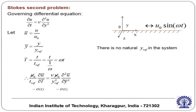Last time we were discussing about some examples of unsteady flows, and in one example we were considering an oscillating boundary. The solid boundary oscillates with a velocity u₀ sin(ωt), so it is a sinusoidal oscillation. We have to figure out how the velocity varies with position and time. We started with the governing differential equation: ∂u/∂t = ν ∂²u/∂y², and began identifying the various scales pertinent to this problem.